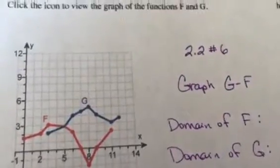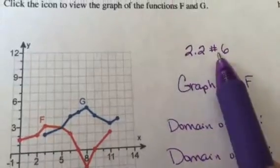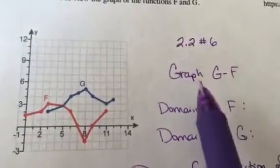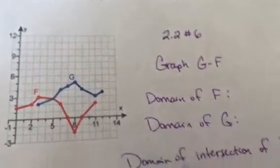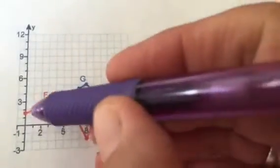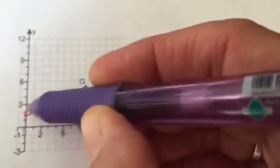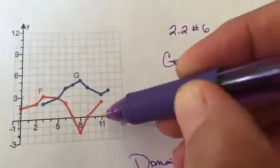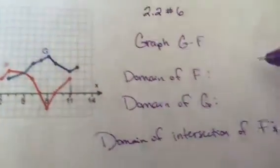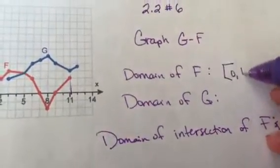I just printed off the graph real quick. I think this is number 6 or the example for number 6, but first you need to find the domain of the intersection. So the domain of f, remember when you're finding domain you're looking at the x's. So f goes from 0 to 11. So here's the domain of f, 0 to 11.